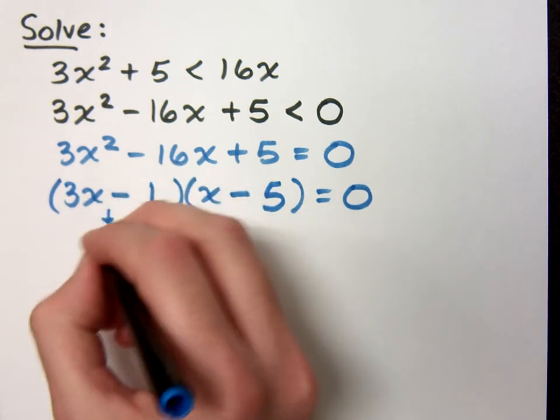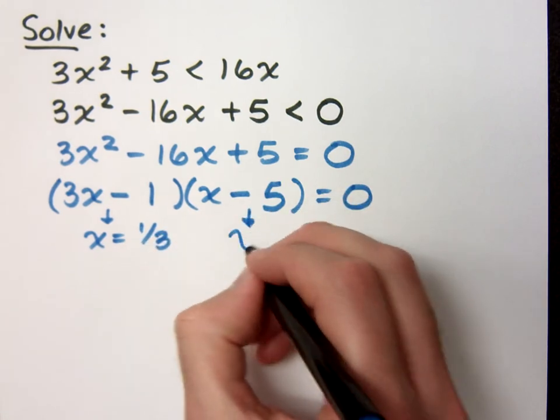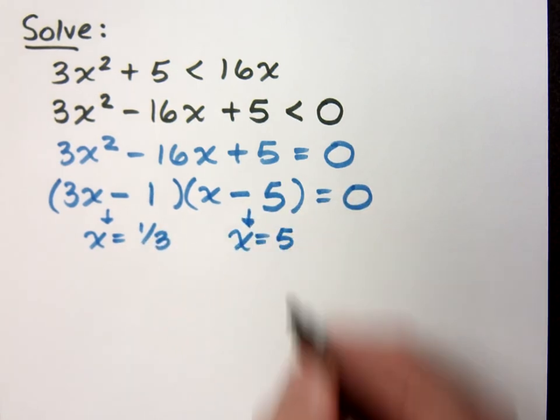So from here, I get that x = 1/3. And from here, x = 5. Now these are my critical values.